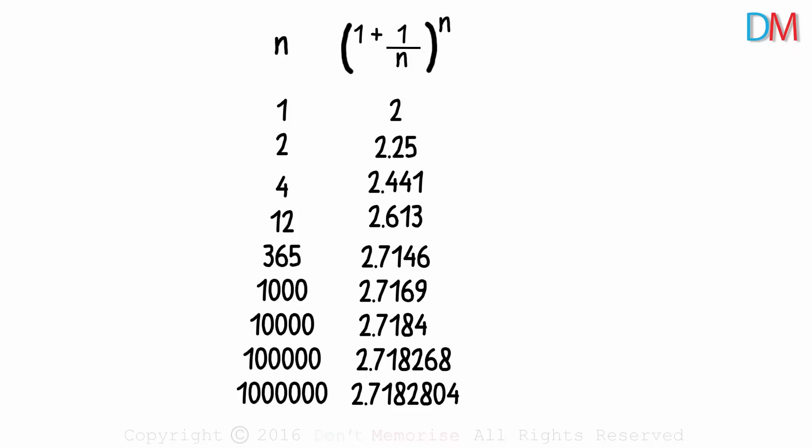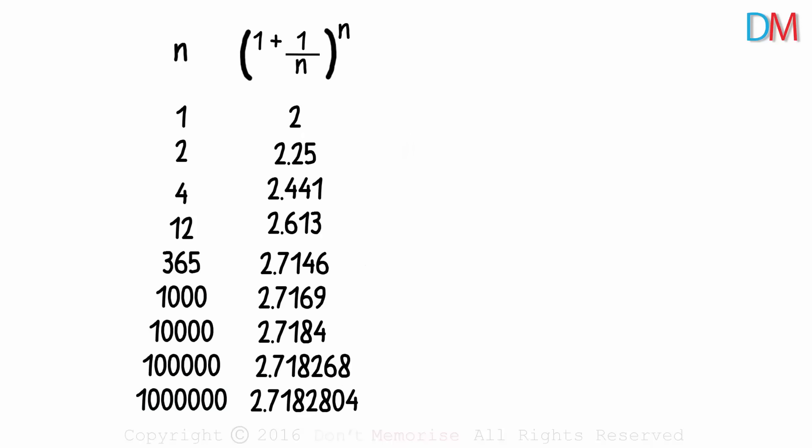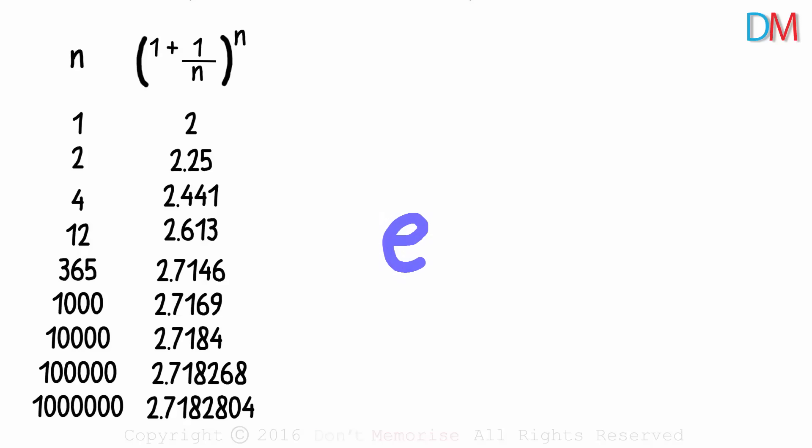Ok, here are a few more calculations. The number of time periods here is one million. Notice that the returns improve, yes. But they converge around a value which approximately equals two point seven one eight. And that is your beloved E. We can't get infinite money after all.